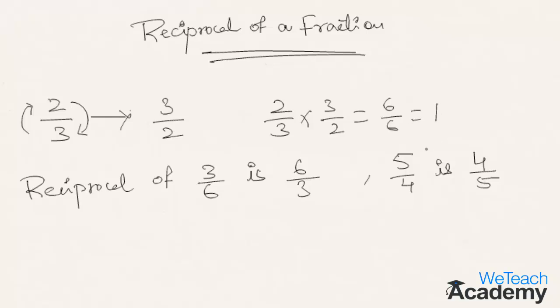In the second example, multiply a fraction with its reciprocal - that is 3 by 6 multiplied by its own reciprocal 6 by 3. We get 18 by 18, which is nothing but 1 again.